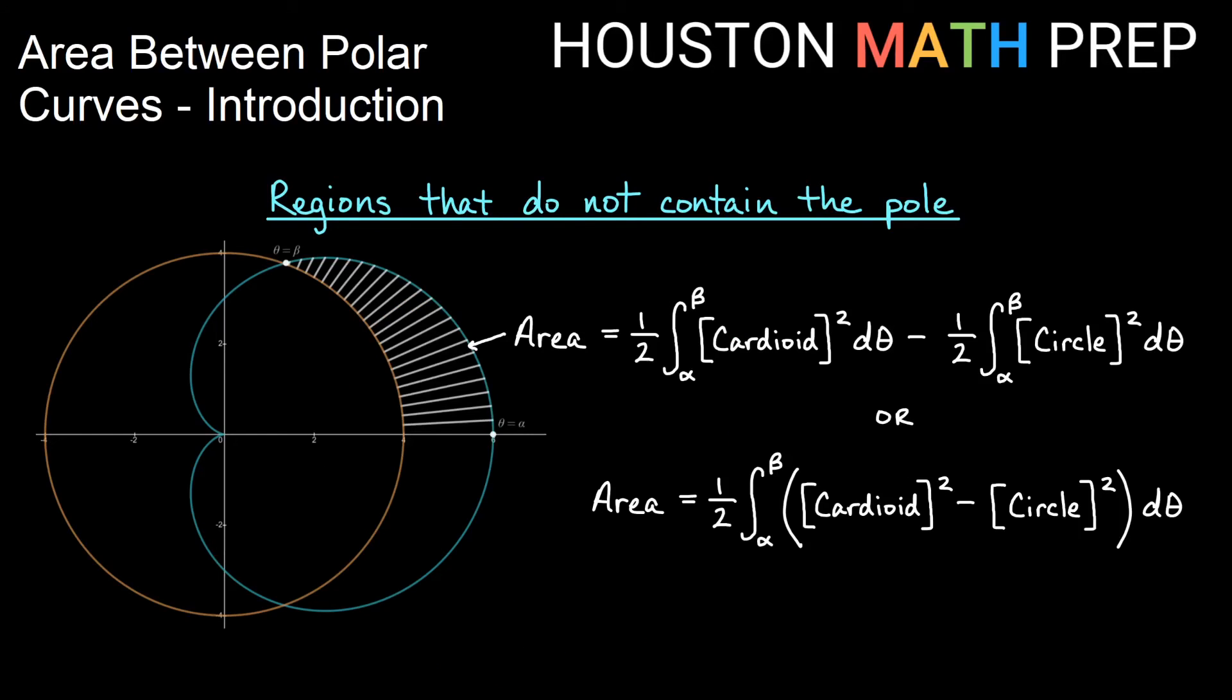Seeing how that works with our formula, so we'll have our one-half function squared integrated d theta from alpha to beta. So what we'll need to do is we will need to take the area inside of the cardioid and we'll need to subtract out the sector area that we get inside of the circle. We can really think of these as one integral of f squared minus g squared where we have a one-half integral of the outer function in terms of theta squared minus the inner function in terms of theta squared.